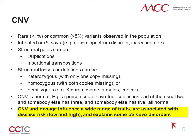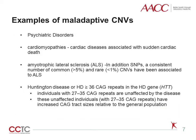Sometimes those copy number variants include several normal genes or dosage-sensitive genes. CNVs and dosage influence a wide range of traits associated with disease risk and explain some disorders that result from de novo mutations. Research shows that disease risk is commonly associated with CNV and dosage-sensitive genes. For example, maladaptive CNVs and gene dosage effects are associated with psychiatric disorders, cardiomyopathies, and amyotrophic lateral sclerosis, or ALS — which, in addition to SNPs, is also associated with rare CNVs.